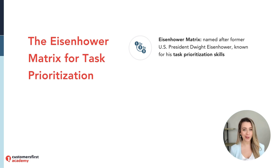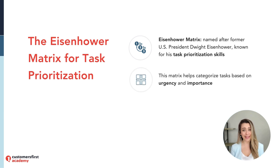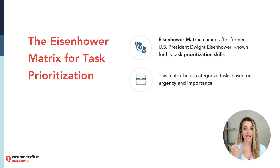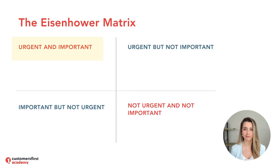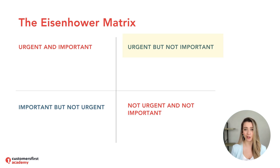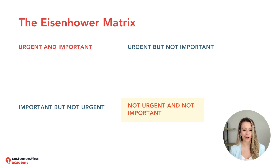It's named after former US President Dwight Eisenhower, who was known for his ability to prioritize tasks. This matrix helps you categorize your tasks based on two key factors: urgency and importance. So let's imagine four quadrants — urgent and important, important but not urgent, urgent but not important, and not urgent and not important.